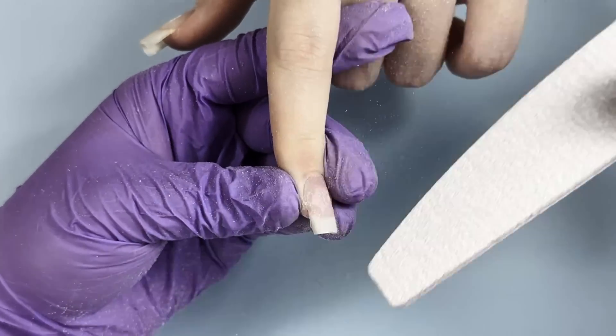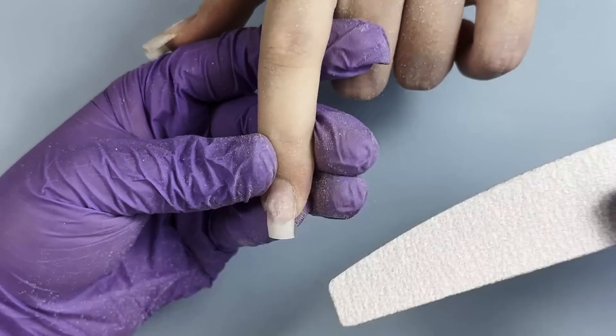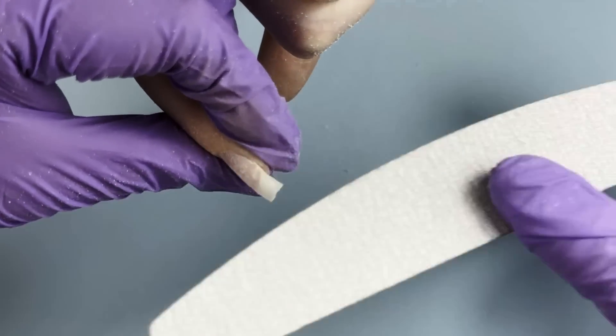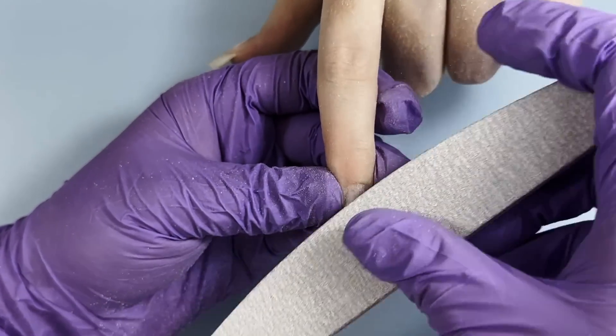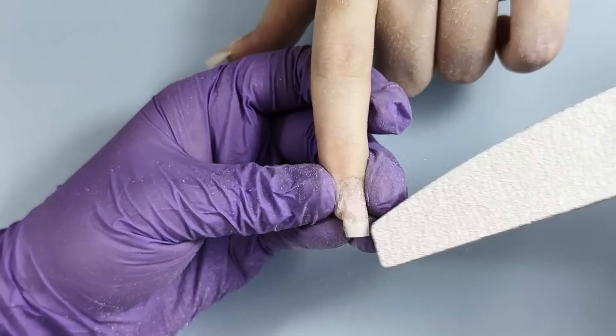To do this sharp square shape, we need to file the free edge, lightly file the sidewalls, and nothing else. Do not touch the corners, because once you do you are going to round and soften them up a little bit and we do not want that.